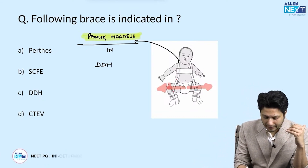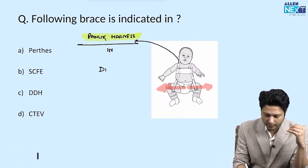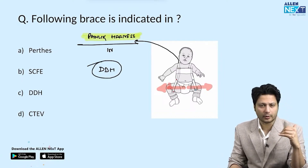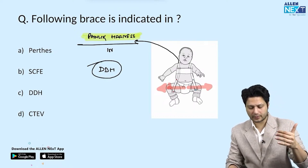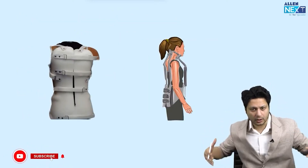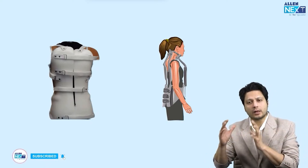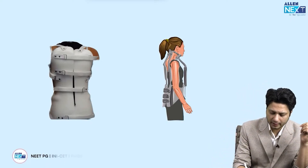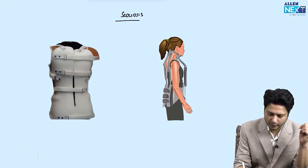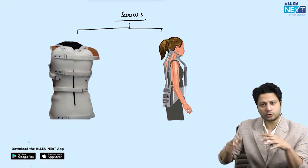The indication for the Pavlik harness is developmental dysplasia of the hip joint, most commonly in newborns. Another category is braces around the trunk of the body. Braces around the trunk are commonly used in scoliosis, so the indication is scoliotic deformity.